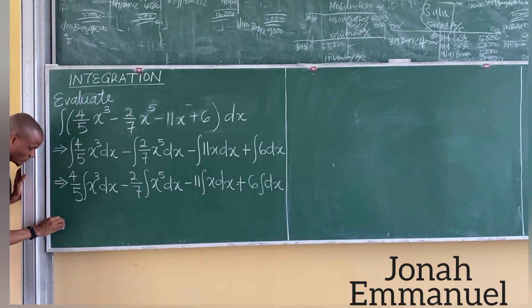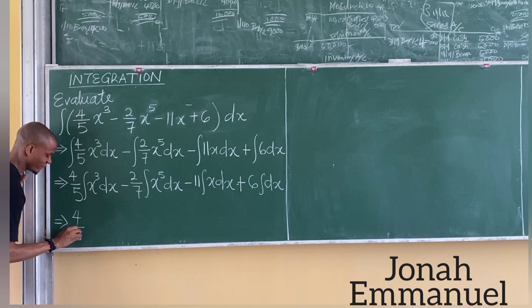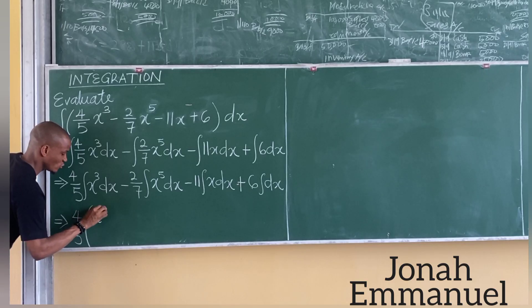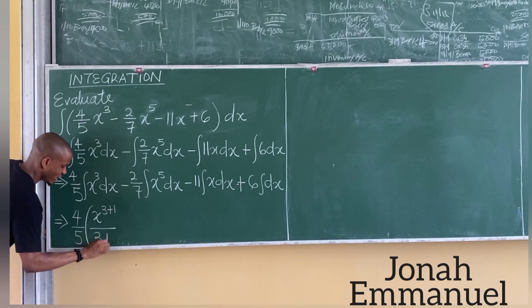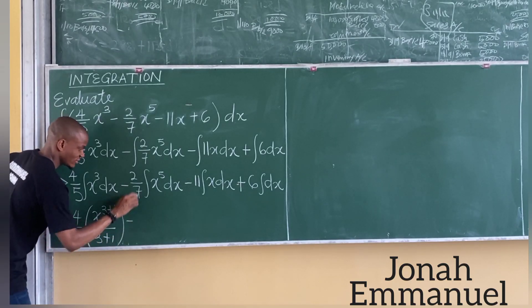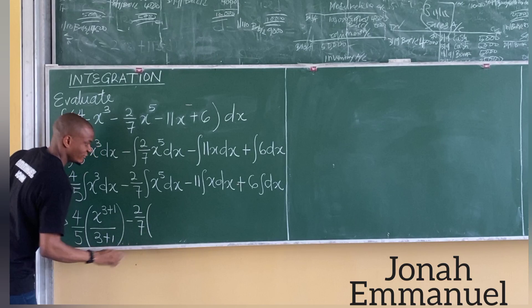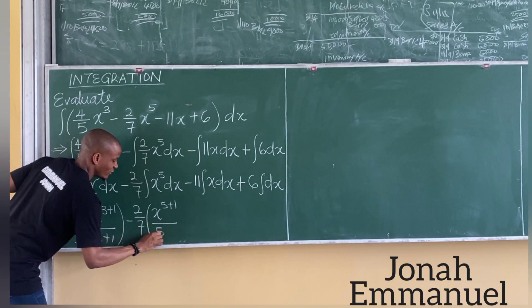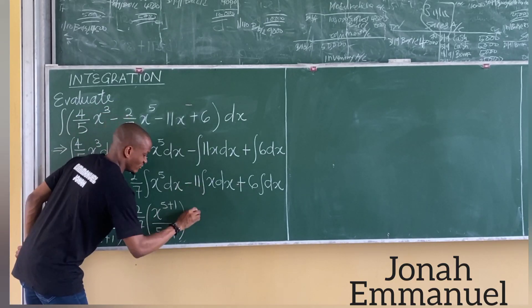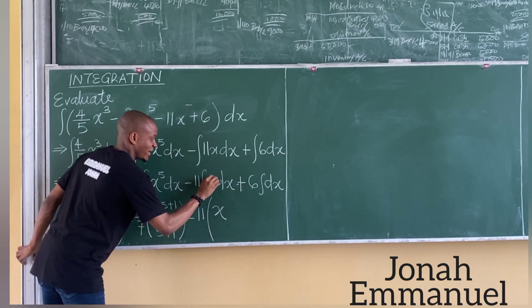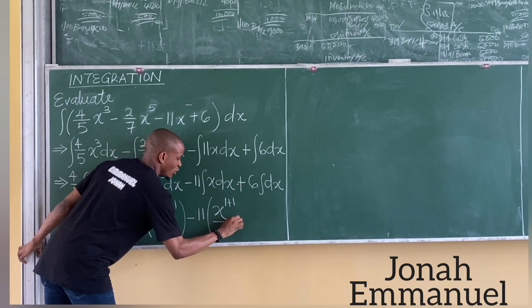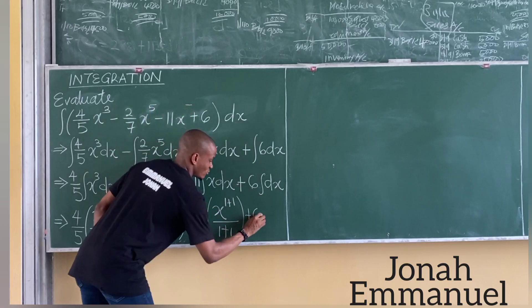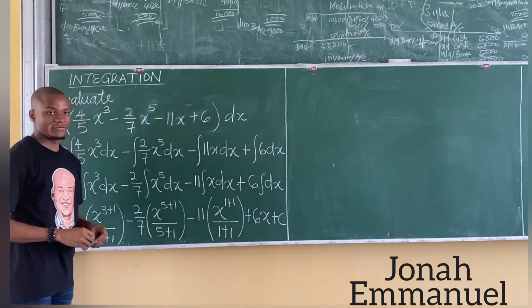Work on this now. It is equal to: 4 over 5 times x to the power 3 plus 1, all over 3 plus 1. Minus 2 over 7 times x to the power 5 plus 1, all over 5 plus 1. Minus 11 times x to the power 1 plus 1, all over 1 plus 1. Plus 6, and the integral of dx is x. Then add c, the constant of integration.